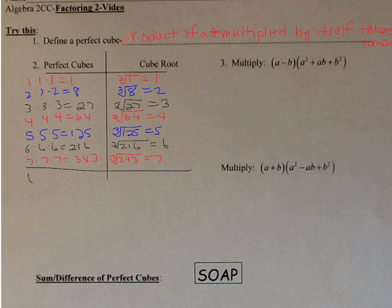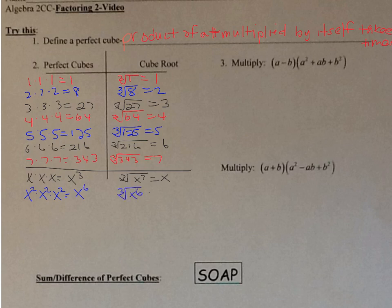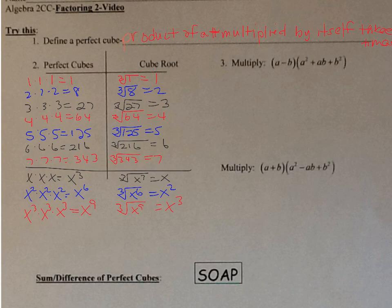Now let's talk about variables. x×x×x = x³ — remember, when you multiply, you add the exponents — so the cube root of x³ is x. x²×x²×x² = x⁶; cube root of x⁶ is x². x³×x³×x³ = x⁹; cube root of x⁹ is x³. x⁴×x⁴×x⁴ = x¹²; cube root of x¹² is x⁴.